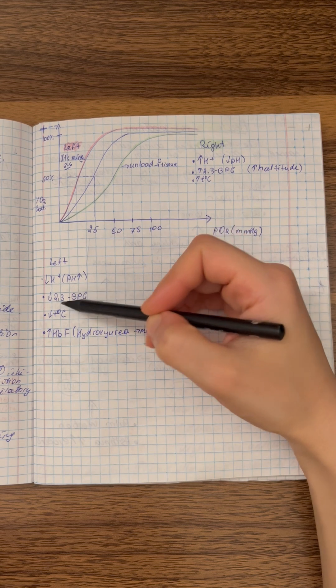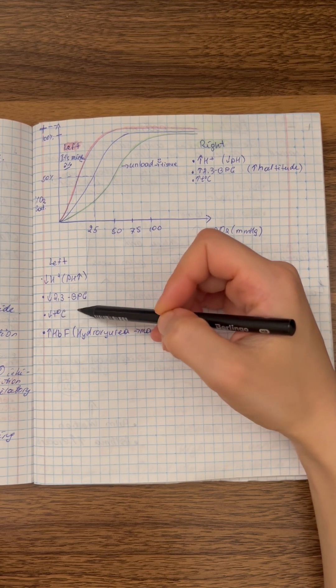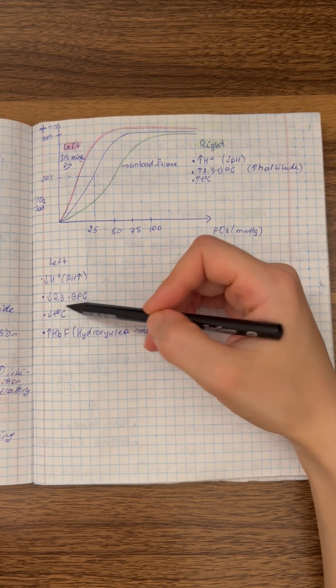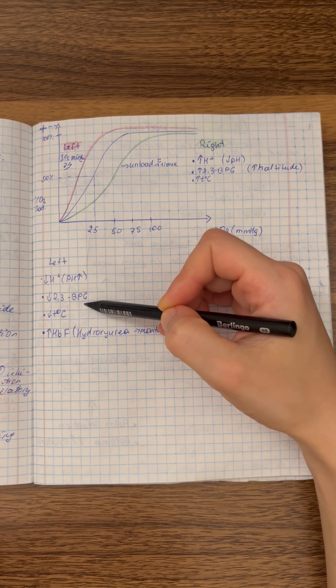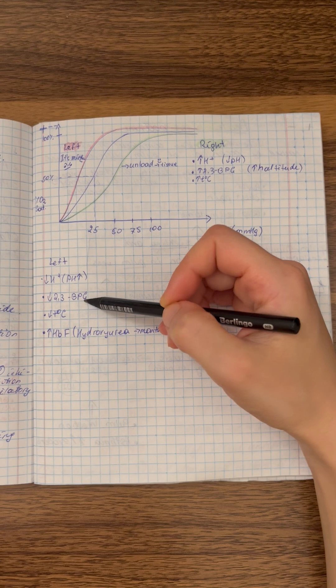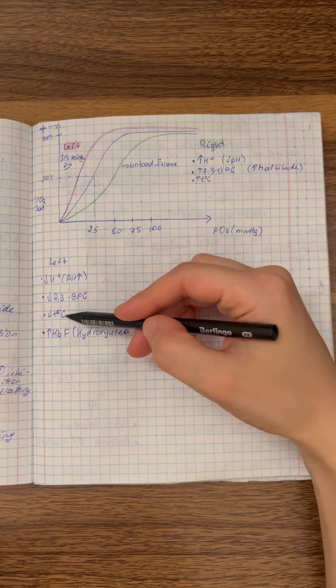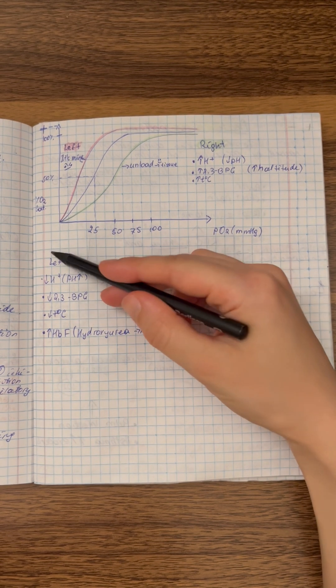Then we can have left shift when 2,3-BPG is decreased. 2,3-BPG stands for 2,3-bisphosphoglycerate. And it is very important to remember when temperature is decreased, the oxygen-hemoglobin dissociation curve is shifted to the left.